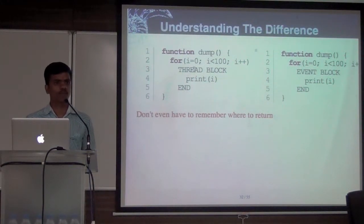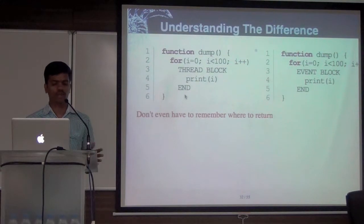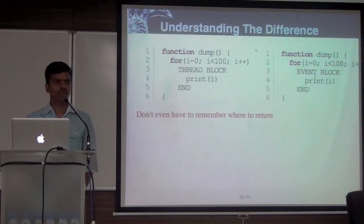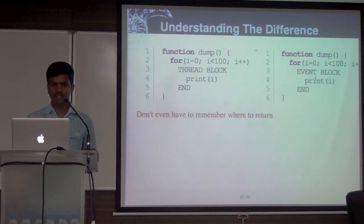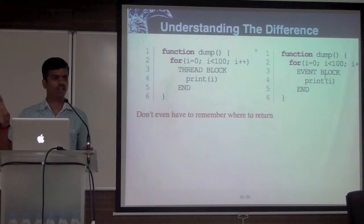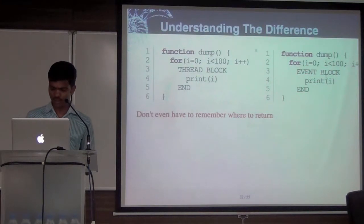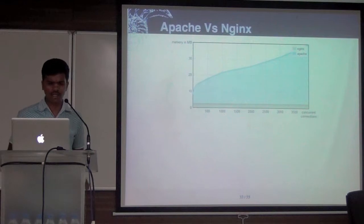Another problem: whenever a thread completes, it has to remember what is the next line to be executed. It's called the thread stack — it has to remember where it should go when the thread is complete. But in case of events, you don't have to remember where to return. Events are something like: when you are done deleting the file, call the event. That event will end immediately after calling the callback — it doesn't have to return to the calling function.